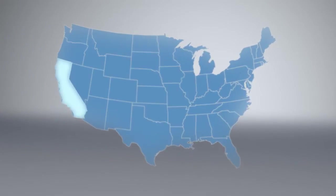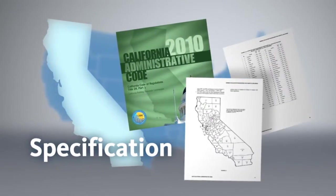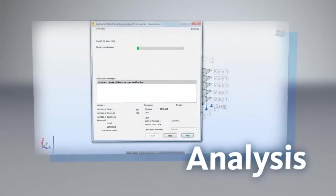Let's say you want to build a structure in California. The first step is to get the correct building codes. Then, you need to analyze the structure.